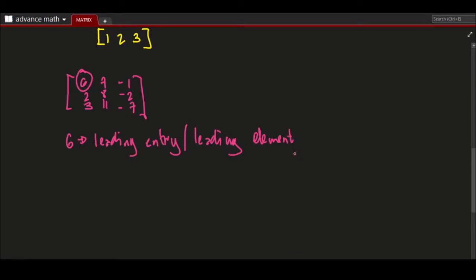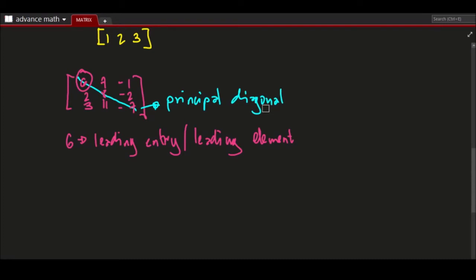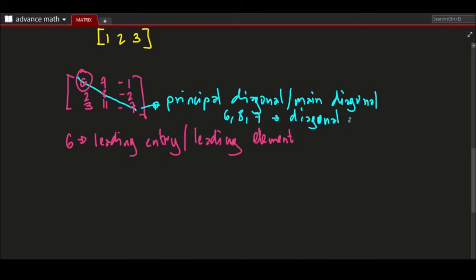The diagonal from upper left to lower right is called the principal diagonal, also known as the main diagonal. The entries contained on the main diagonal — 6, 8, and 7 — are called the diagonal entries.